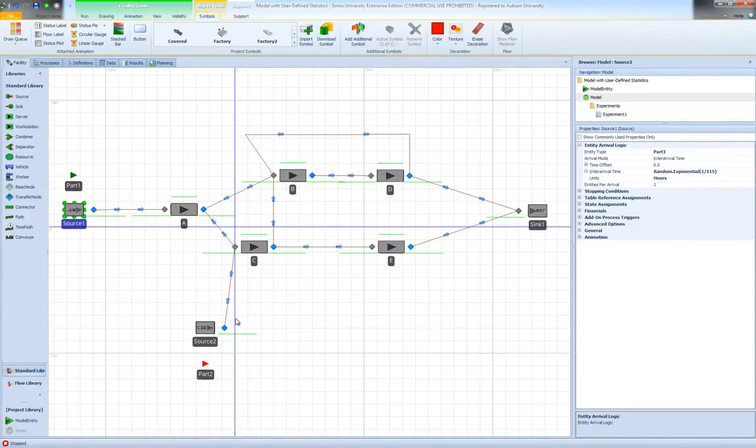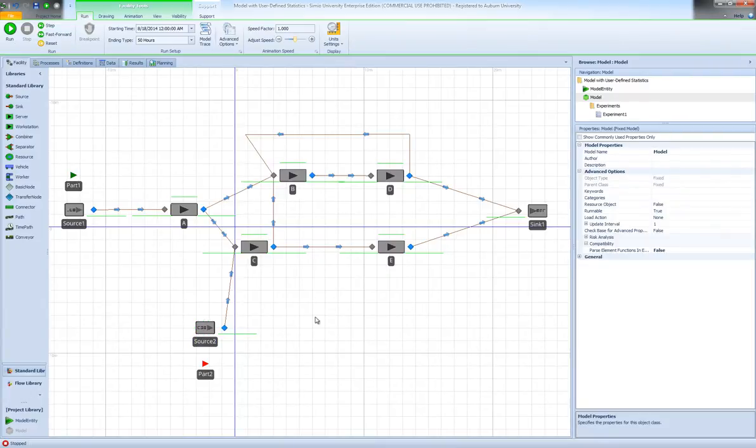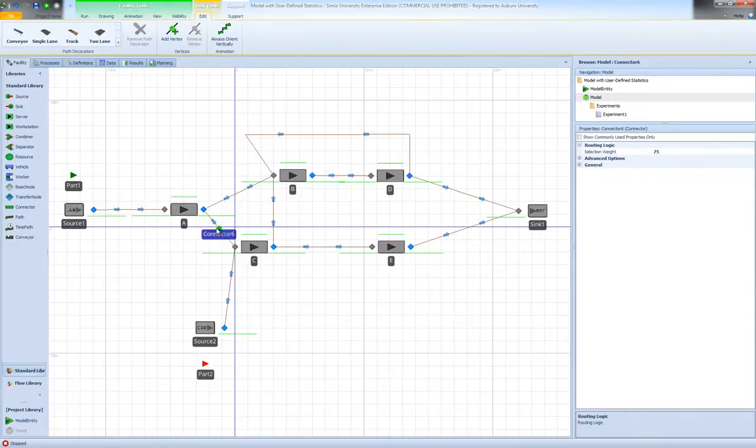We have source 1 that creates part 1 according to its arrival process, and the second source that generates part 2 with the specified inter-arrival time. We have our 5 server objects and we have implemented our routing logic or probabilistic routing using the selection weights on our links.